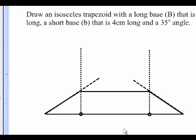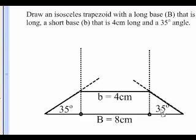And to label my trapezoid. The big base is 8 centimeters in length. The small base is 4 centimeters in length. And I have a 35 degree angle over here. And I have another 35 degree angle over here.